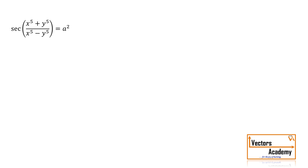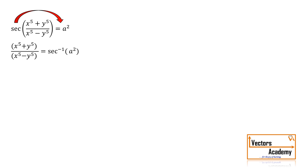We can push terms from the left hand side to the right hand side. For example, taking sec to the right hand side gives sec inverse of a square. The right hand side still contains no variable x or y — it is a constant term, so its derivative will be 0.